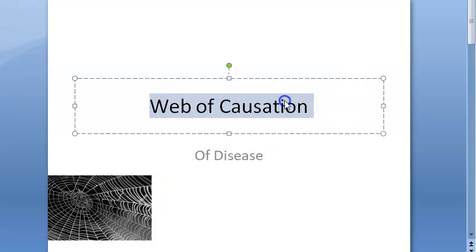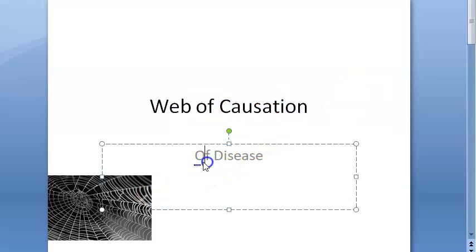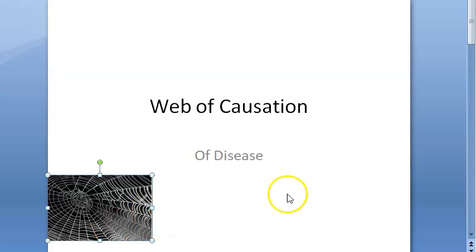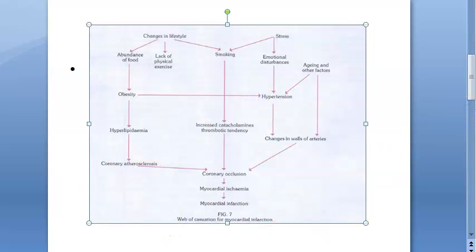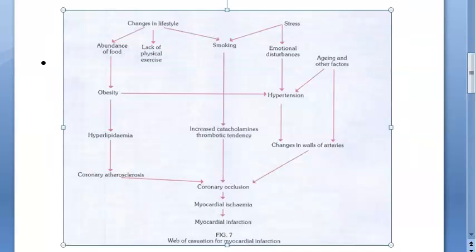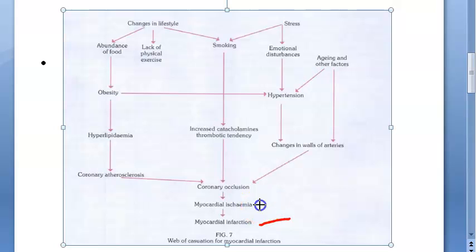In this video we want to look at the web of causation — causation of disease. Why does the disease happen? Let's look at this web using the example of a myocardial infarction. Look at the web — myocardial infarction is shown below.